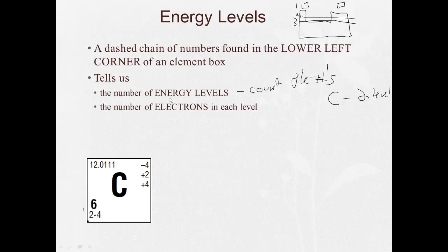This tells us if we count them, we see there's two energy levels. It tells us the number of electrons in each level. So the first energy level has two. The second energy level has four. And then this tells us how these electrons are arranged around the nucleus.